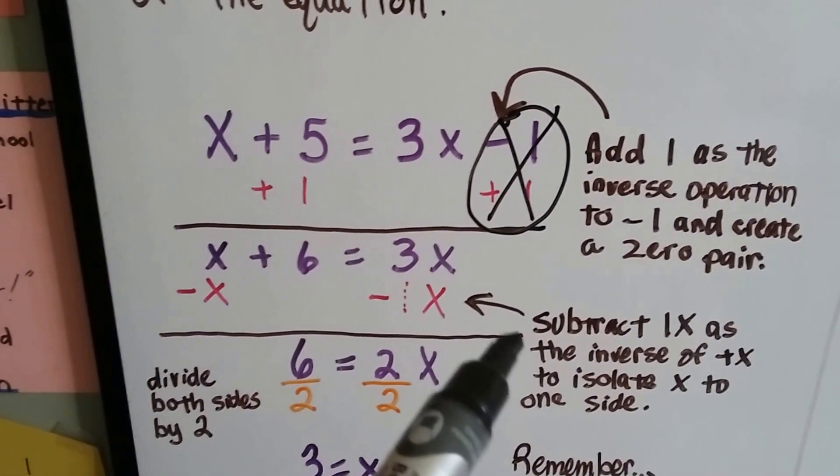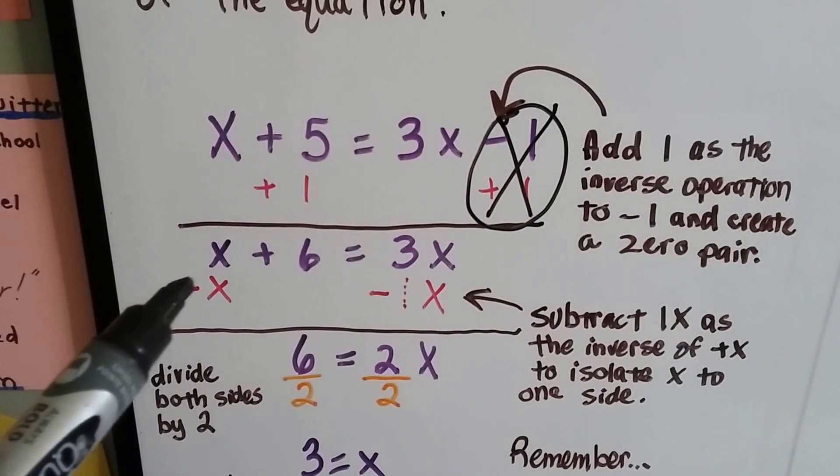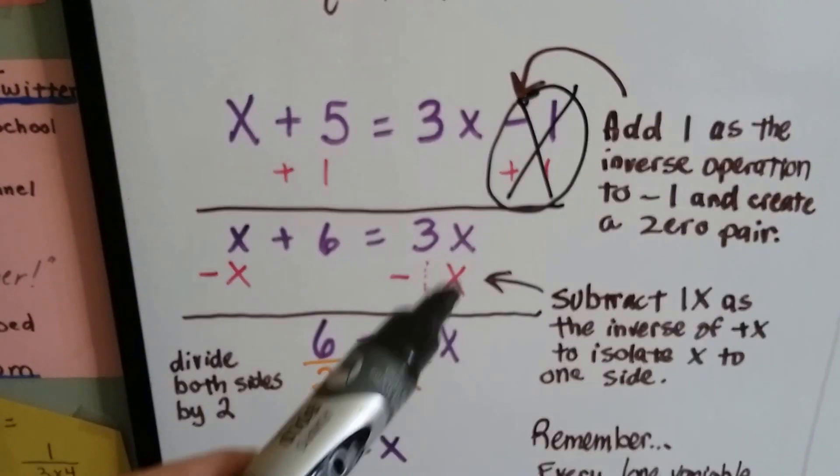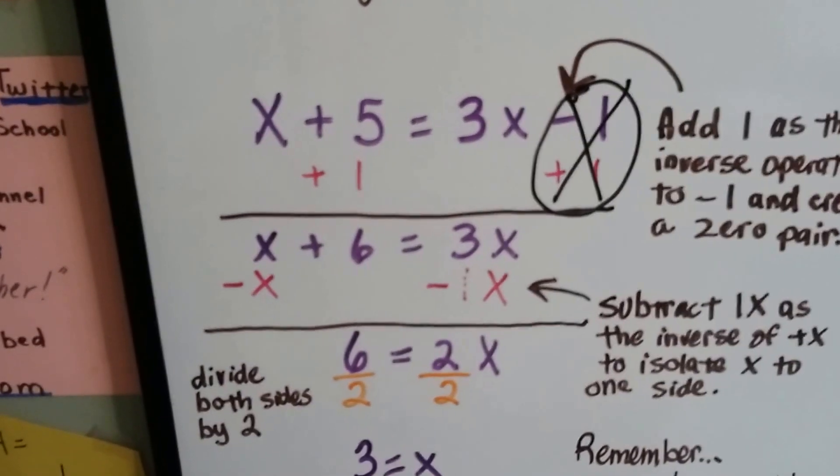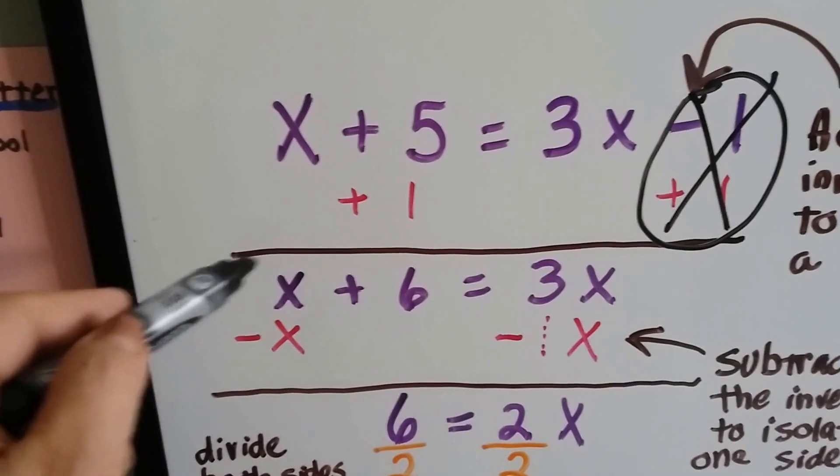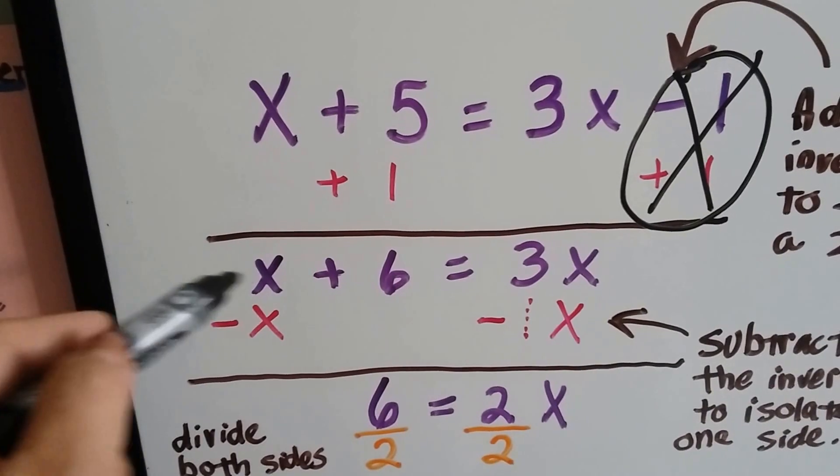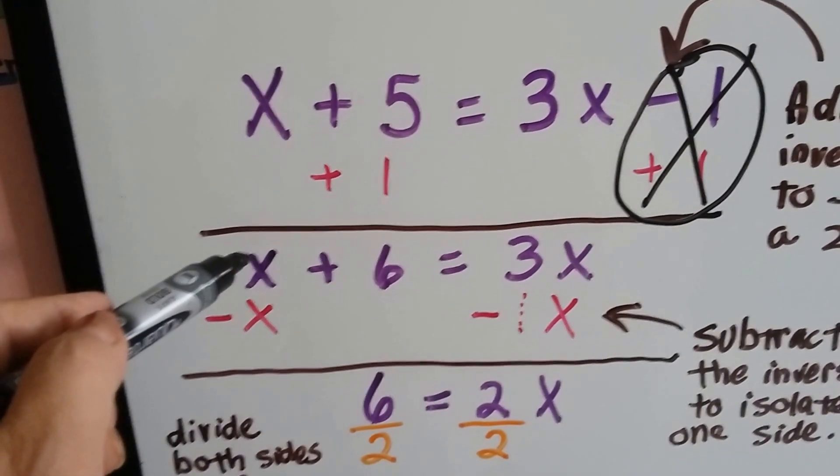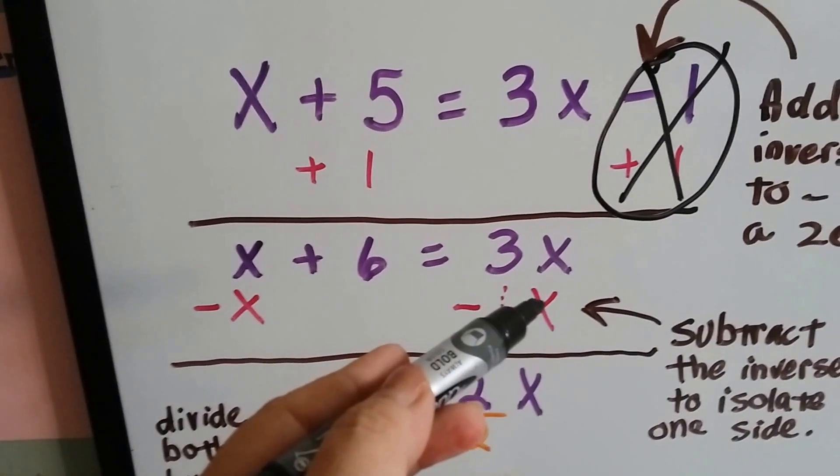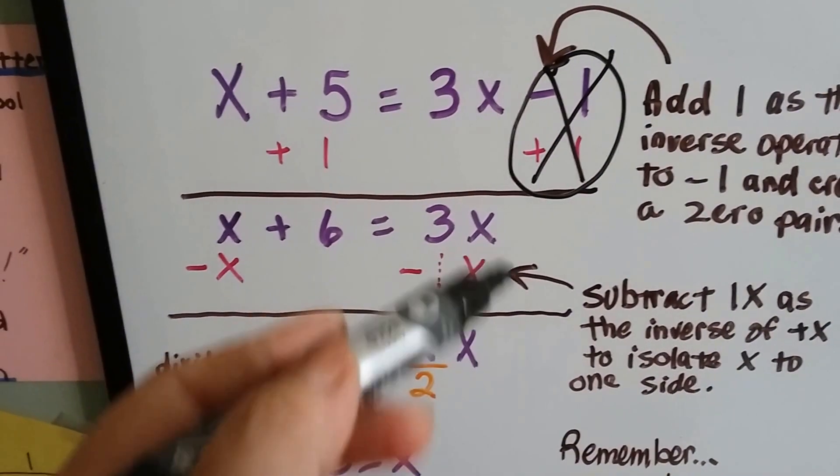Now we need to subtract an x from each side as an inverse operation, so that x will be isolated to this side of the equation. Because this is a positive x, it doesn't have a sign in front of it. If it was negative, there would be a negative sign there. So we're going to subtract x from this side, and subtract an x from this side.